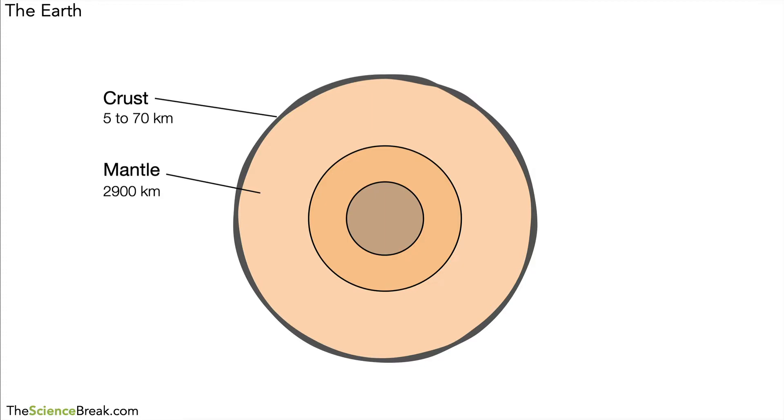And then below that, if you go further in we have the outer core. The outer core is approximately 2,250 kilometers. And then inside of that we have what's called the inner core. And that is about 1,220 kilometers from its outside edge to the middle.